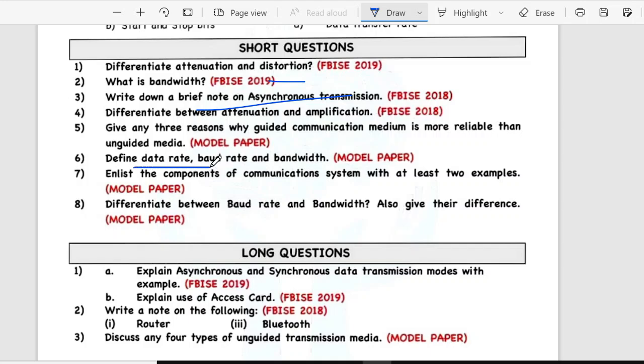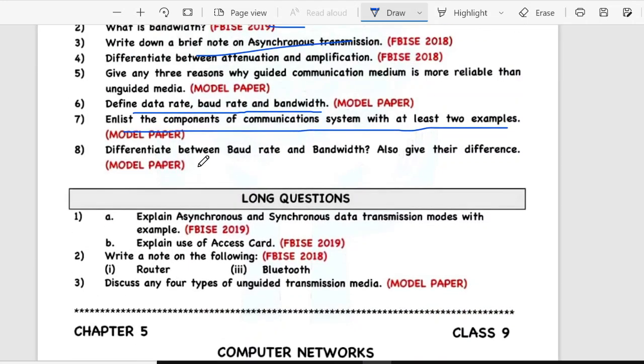Sixth is define data bandwidth and bandwidth. Seventh is enlist the components of communication system with at least two examples. Eighth, differentiate between baud rate and bandwidth. Also give their difference.